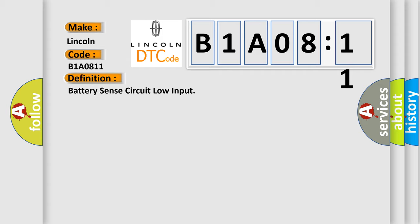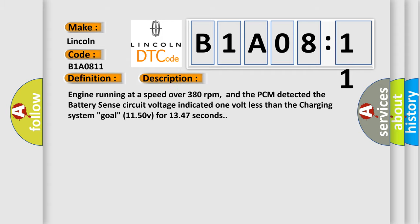And now this is a short description of this DTC code. Engine running at a speed over 380 revolutions per minute, and the PCM detected the battery sense circuit voltage indicated one volt less than the charging system goal of 1150V for 1347 seconds.